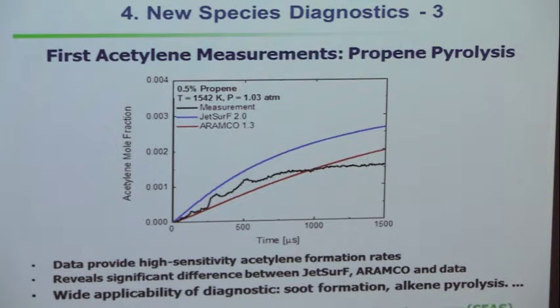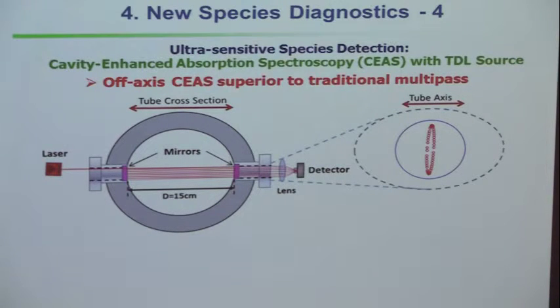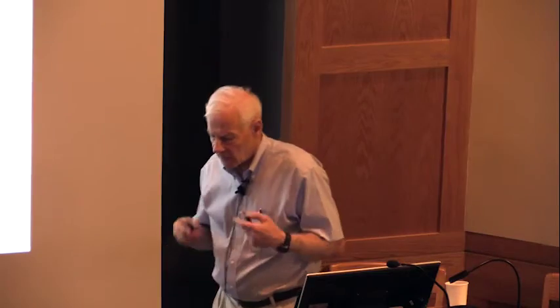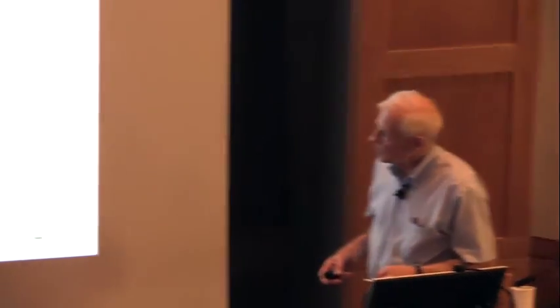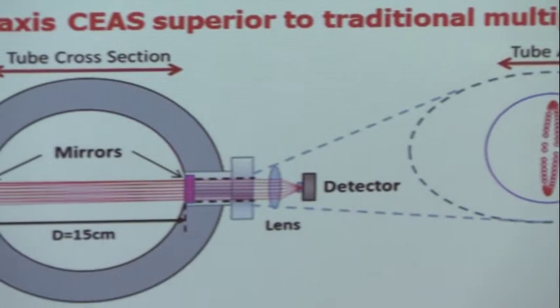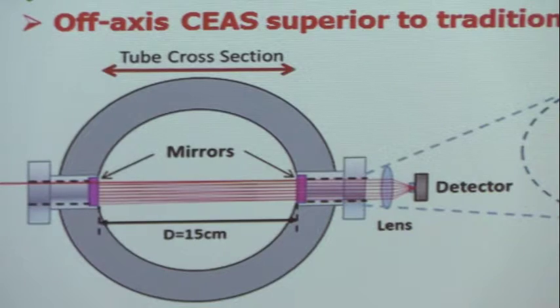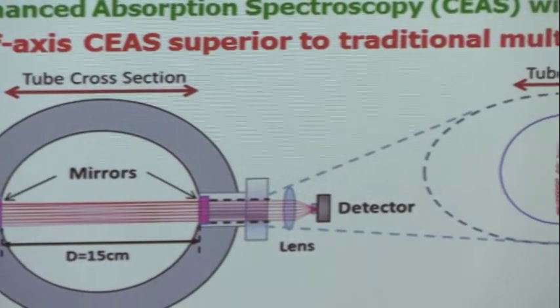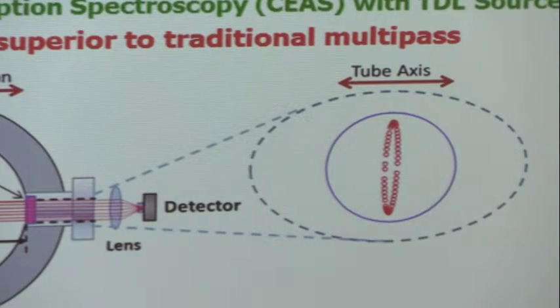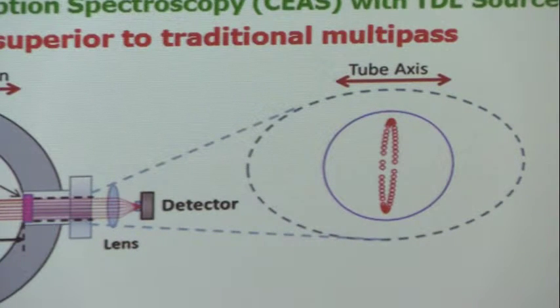This idea is called cavity-enhanced absorption spectroscopy. Right now we define L as the path length across our reactor — the diameter of the shock tube. If you want multiple passes, you usually bounce the light back and forth using a White cell or Herriott cell, where light comes in a hole in a mirror, bounces back and forth, and exits another hole. The trouble is that beam steering limits how many passes you can make in a shock tube — typically five, six, or seven is about all you can do. But there's a trick.